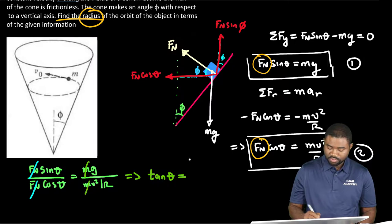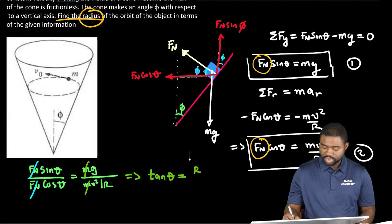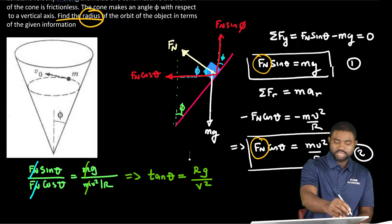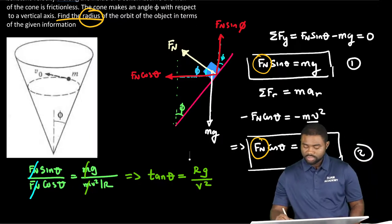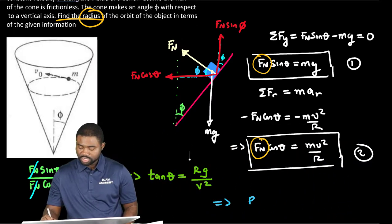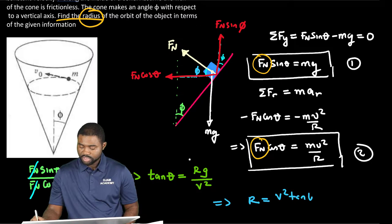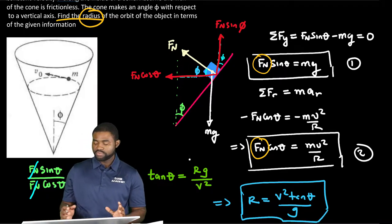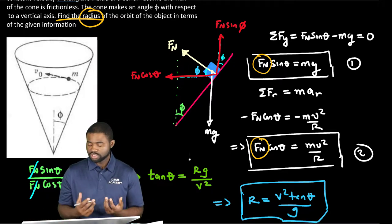And if that is the case, this would mean that r is equal to v squared times the tangent of theta all divided by g. And that will be our answer. So this is the radius of the circular cone.